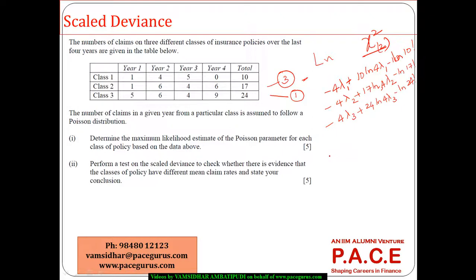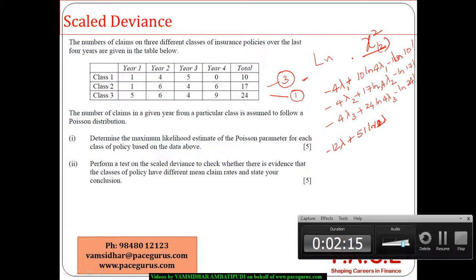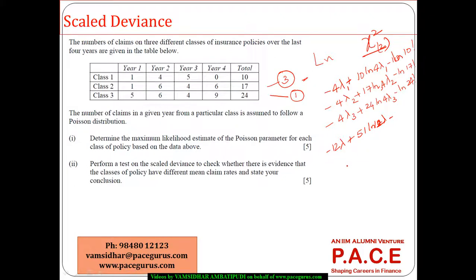And when I am combining all of them into one single, it is coming out as minus 12 lambda, plus 51 log 4 lambda, or 51 log 12 lambda itself. So this is the case of single parameter. Of course again it comes out as minus log 10 factorial minus log 17 factorial minus log 24 factorial.